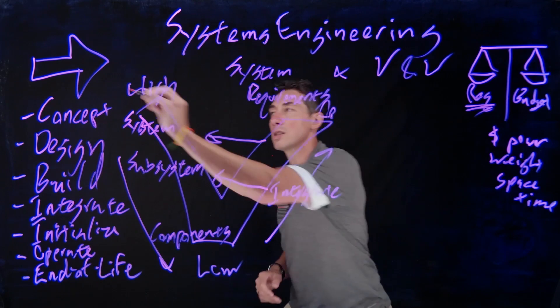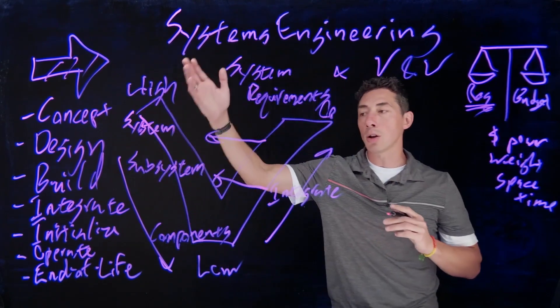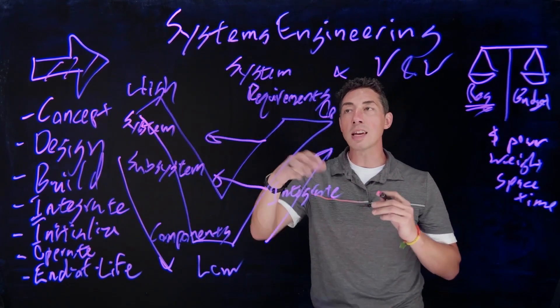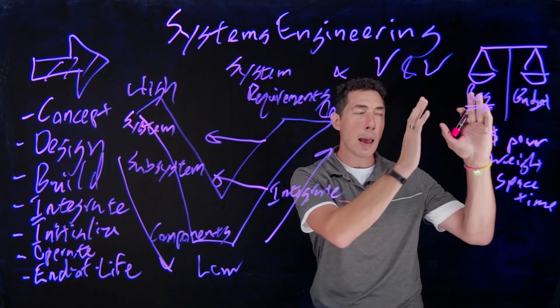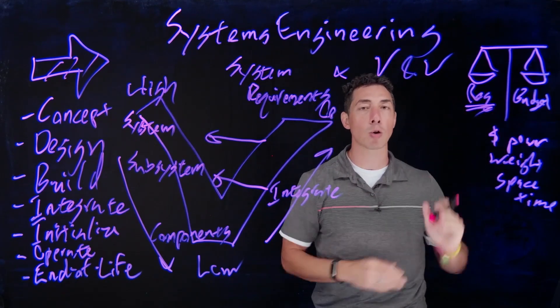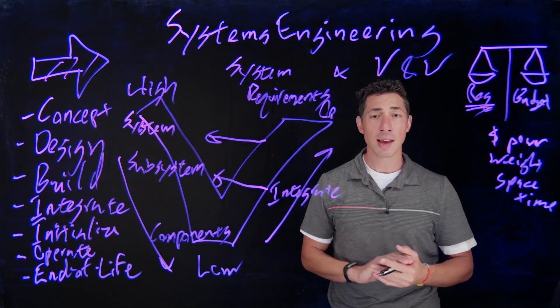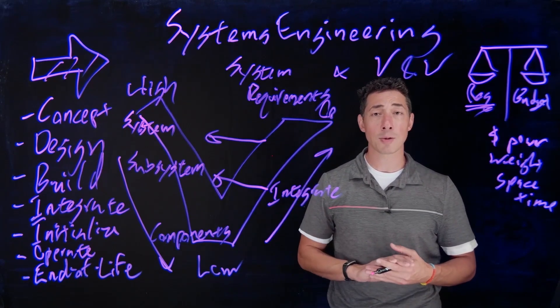So the idea is to move through this entire life cycle. You're going to follow this system V using these systems requirements and validation verification practices and balance the budget against the requirements throughout the entire process. And that's all I had to say about that. Thanks very much for watching.